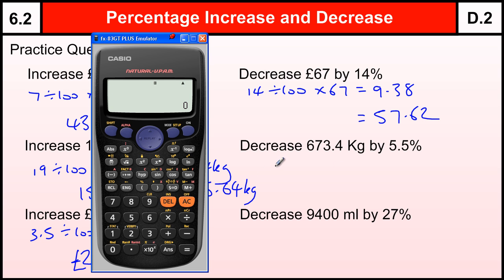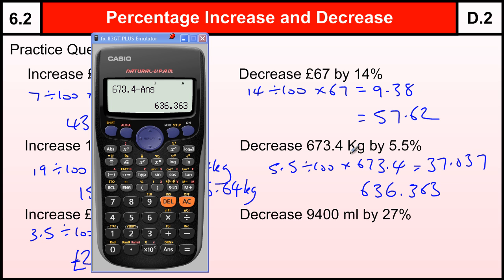The next one, 5.5 divided by 100 times by 673.4. So 5.5 divided by 100 is 0.055 times by 673.4 is 37.037. And we want to do 673.4 minus the answer, which is 636.363 kilograms. Sometimes people get a little bit confused with the percentage, but you're calculating a value that you need to stick to the same units.